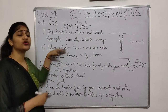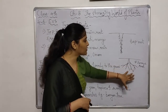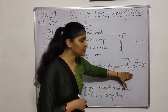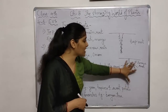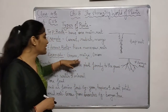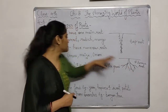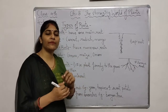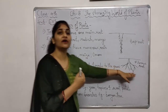Fibrous roots do not have any main root — they have a number of roots. As you can see in this diagram, there is no particular main root; there are many roots in each bunch, making a net-like structure. We call these fibrous roots. Onion also has a fibrous root.